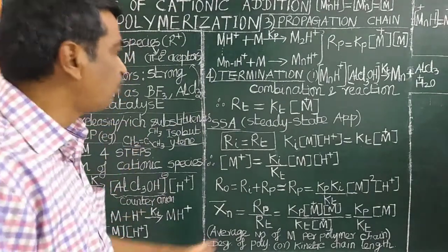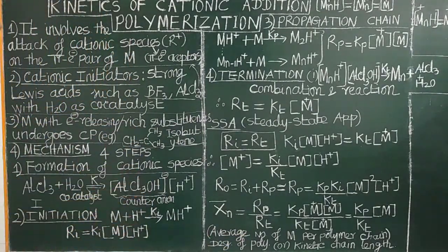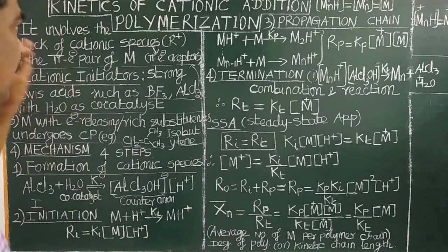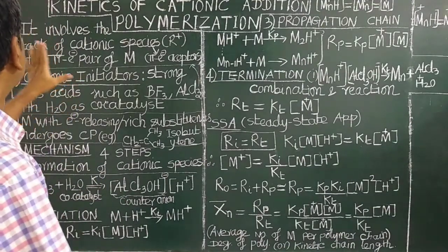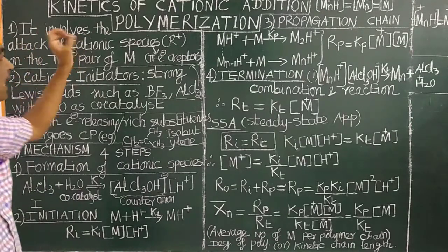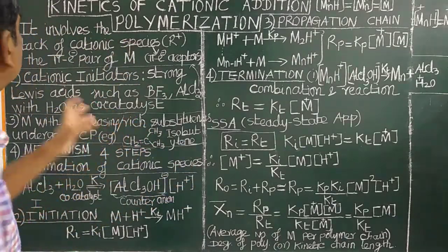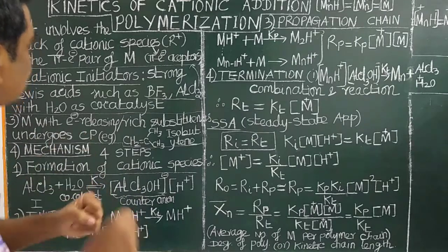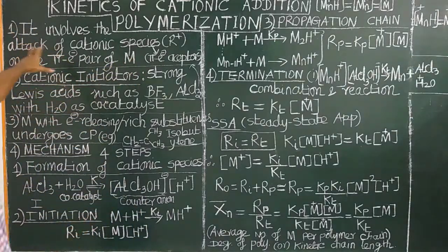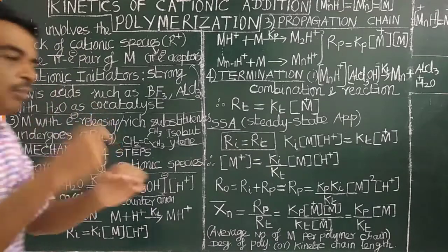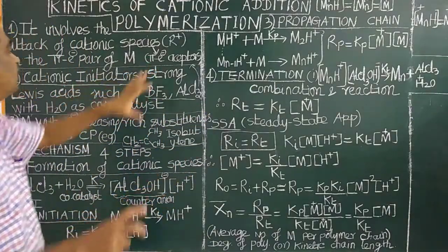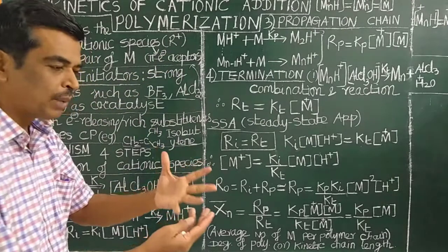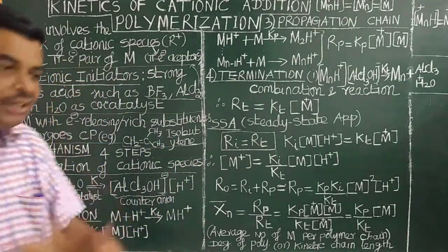In the kinetics, degree of polymerization, and mechanism of cationic addition polymerization: it involves the attack of cationic species on the π electron-rich unsaturated alkenes possessing electron-releasing groups. The π electron pair of the alkene is the site of attack. The cationic species are π acceptors, and the alkenes are π donors.